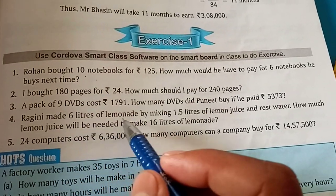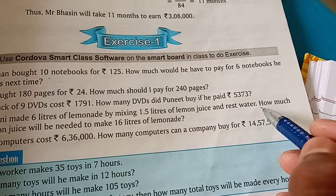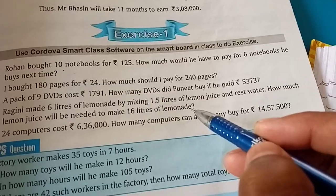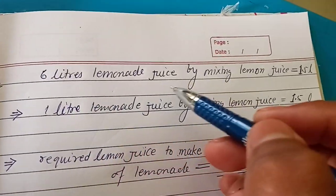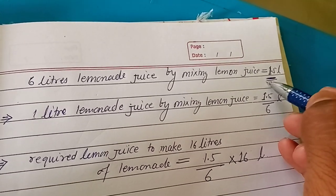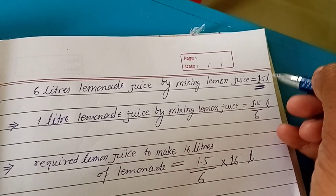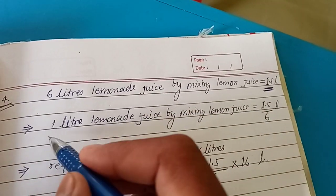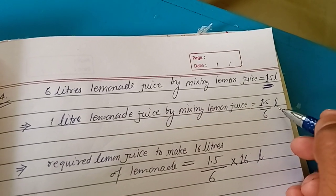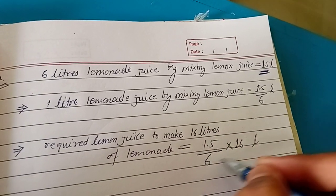Question number fourth: Ragni made 6 liters of lemonade by mixing 1.5 liters of lemon juice and rest water. How much lemon juice will be needed to mix 16 liters of lemonade? 6 liters of lemonade requires lemon juice equal to 1.5 liter. This implies 1 liter lemonade requires lemon juice equal to 1.5 upon 6 liter. Required lemon juice to mix 16 liters equal to 1.5/6 into 16.